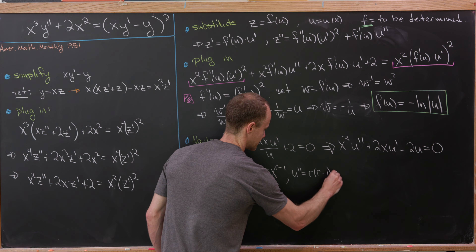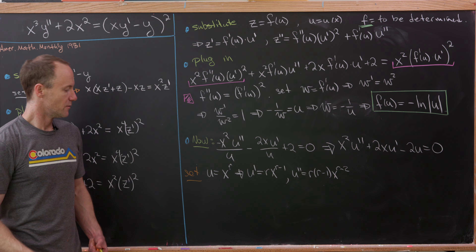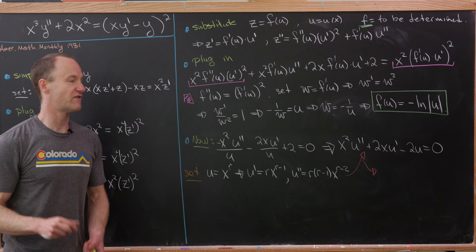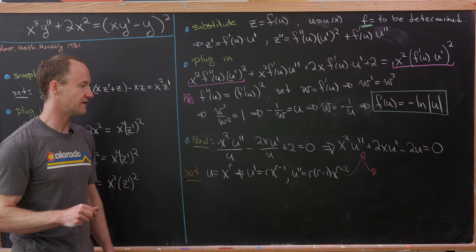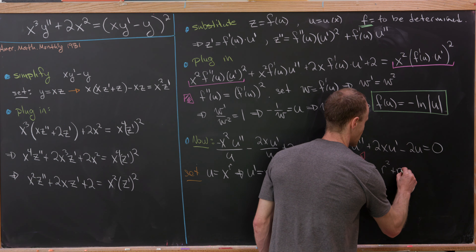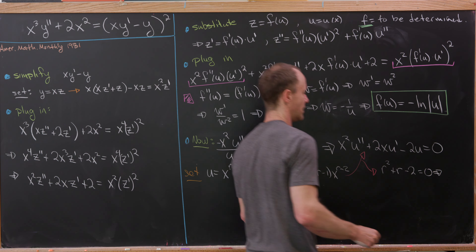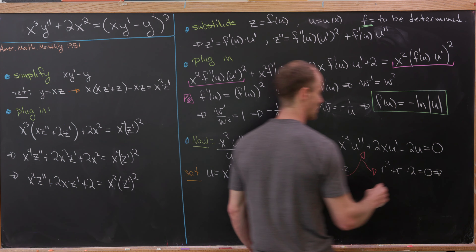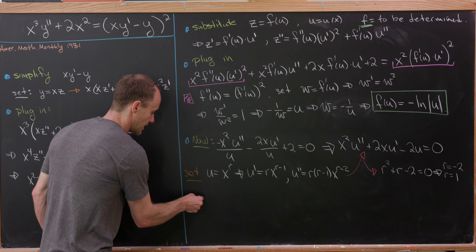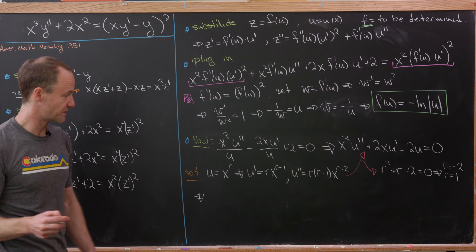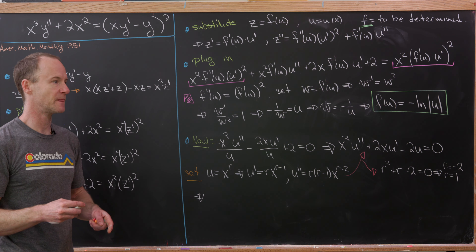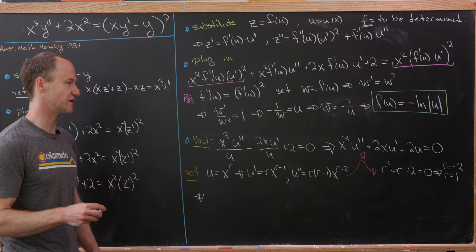With u = x^r, we have u' = rx^(r-1) and u'' = r(r-1)x^(r-2). Substituting into the Cauchy-Euler equation and factoring out x^r, we get the characteristic equation r² + r - 2 = 0, which factors to give r = -2 or r = 1. So u = x or u = x^(-2) are solutions, and since the equation is homogeneous, the general solution is u = ax + b/x².